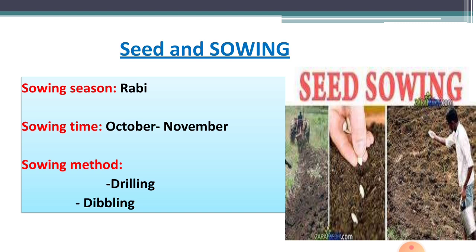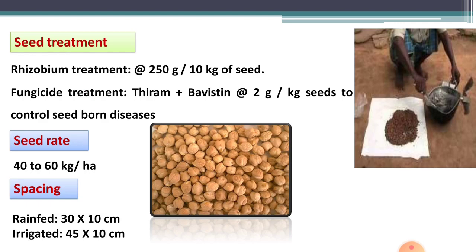The sowing method: this crop is sown by one of two methods — first is drilling, using a sowing drill, and second is dibbling, done by hand.